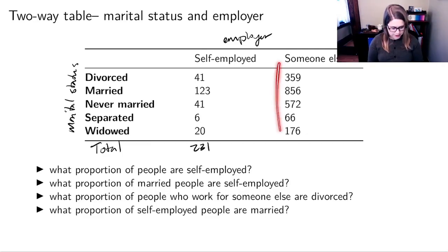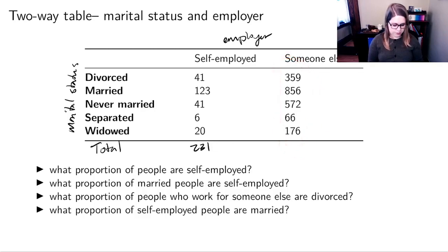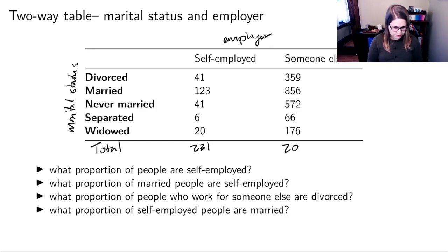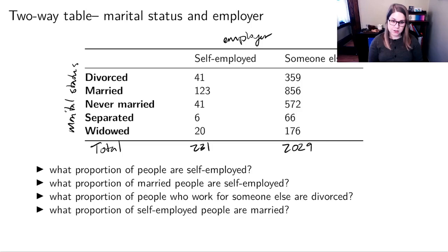We're also going to add up how many people are employed by someone else — 359 and down — and I got 2029. That kind of makes sense: most people work for someone else, and a smaller percentage of them are self-employed.